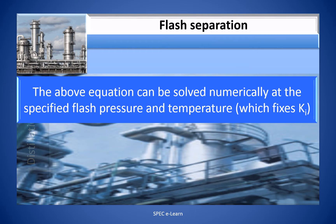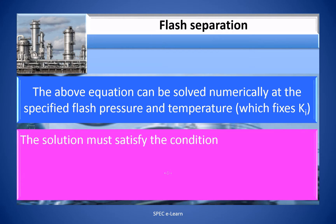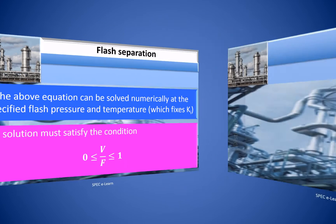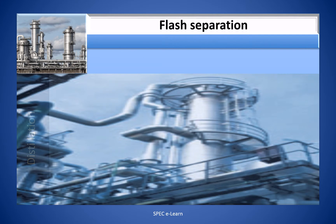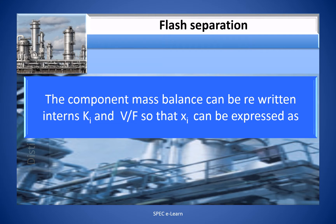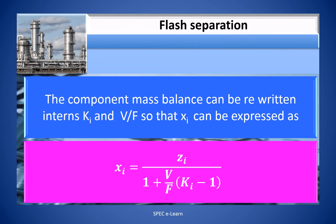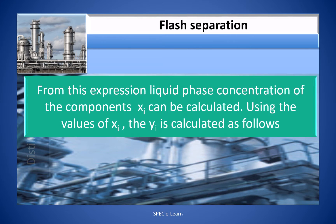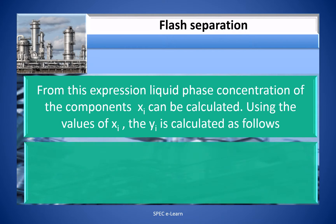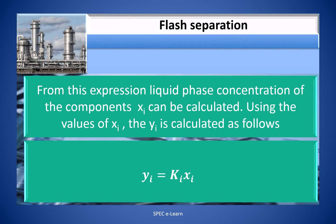The above equation can be solved numerically at the specified flash pressure and temperature, which fixes K. The solution must satisfy the condition that V/F lies between 0 and 1. The component mass balance can be rewritten in terms of K_i and V/F so that X_i is expressed as: X_i = Z_i divided by 1 plus (V/F) times (K_i minus 1). From this expression, the liquid phase concentration X_i can be calculated. Using X_i, the vapor composition Y_i is calculated as: Y_i = K_i times X_i.